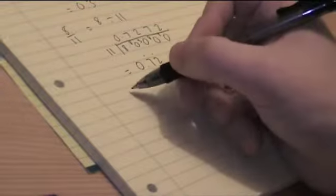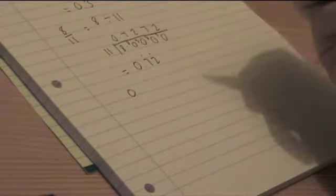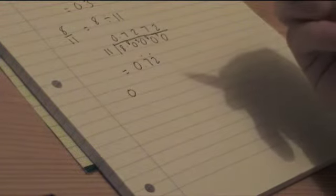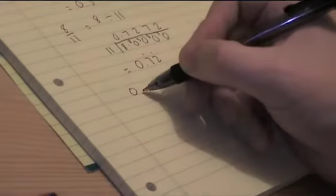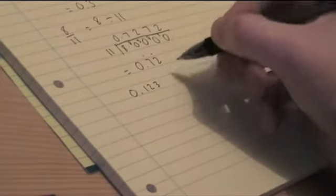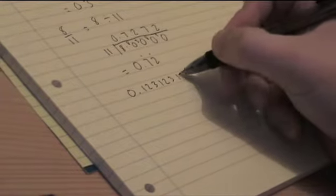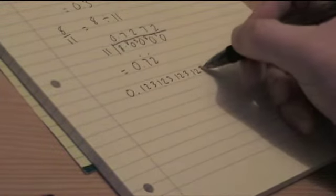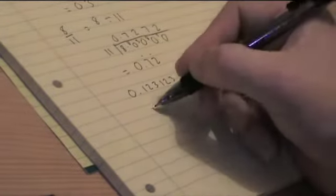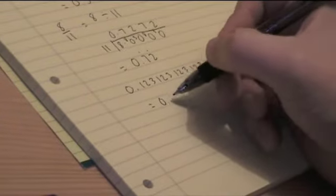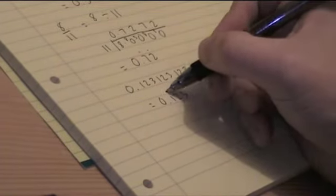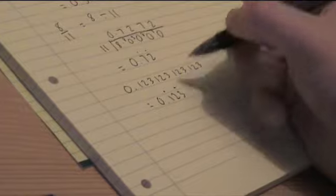For reference, you put dots over the end numbers of the parts that recur. So 0.123, 1, 2, 3, 1, 2, 3, 1, 2, 3, and so on would be written as 0.123 with a dot over the 1 and a dot over the 3, because that is the ends of the parts that recur.